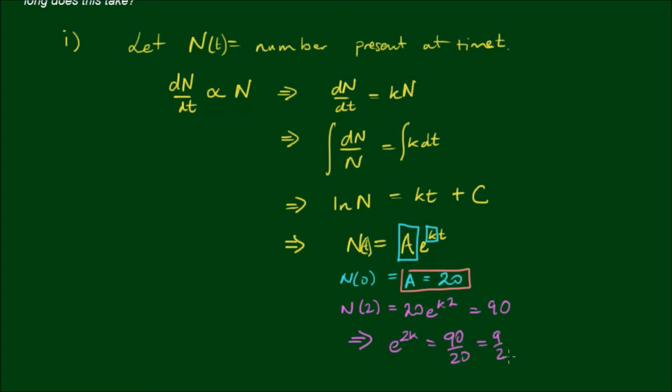Taking the natural log of both sides, we end up with 2k equals about 1.5, which means k equals about 0.75. So the explicit solution is N equals 20 times e to the 0.75t, where t is in hours.